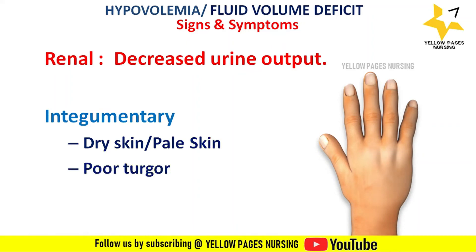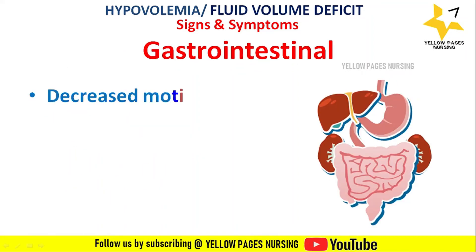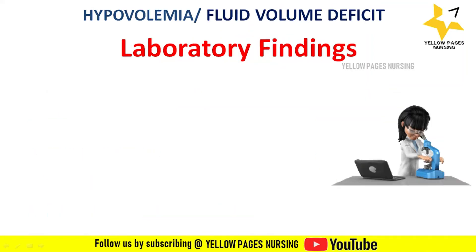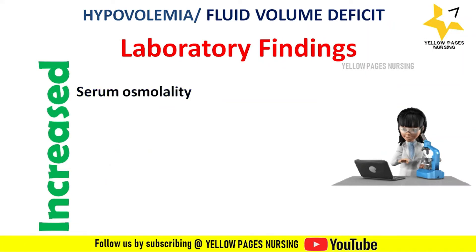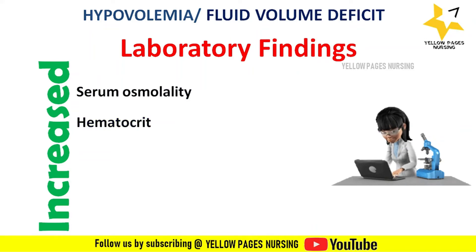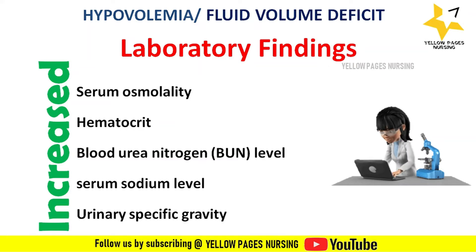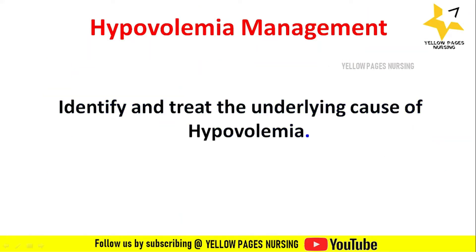Additional fluid volume deficit symptoms include poor skin turgor, dry mouth, decreased GI motility, diminished bowel sounds, constipation, thirst, and decreased body weight. Laboratory findings include increased serum osmolality, increased hematocrit, increased blood urea nitrogen, increased serum sodium, and increased urinary specific gravity.